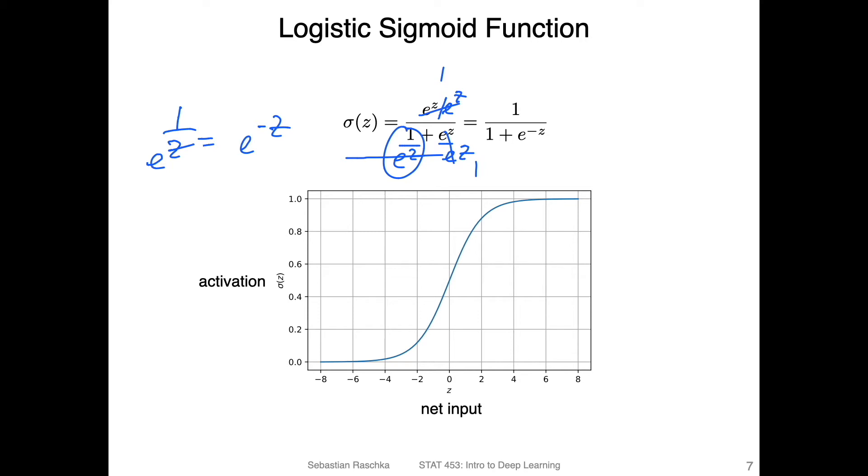Alright, so here's how it looks like. We have the activation here plotted on the y axis and the net input, which is passed to the activation function, on the x axis. This is really the input to the activation function here. You can see that it's centered around zero. If the input is zero, then the output will be 0.5. It saturates here at one, so the maximum value approaches one. And here on the other hand it approaches zero. So it's a function between zero and one.